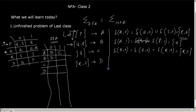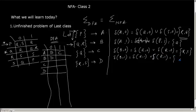Computing δ(B, 1): this gives us q with one, which results in the set {q, r, s}. This is again a unique set of states, so we represent it as state E.